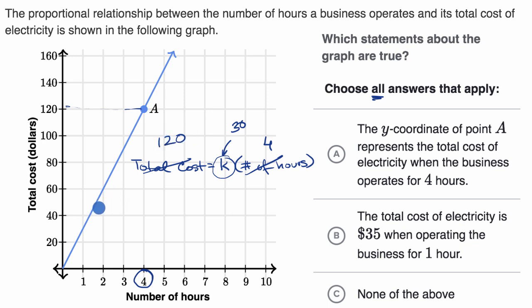So we can write that proportional relationship where our total cost is going to be equal to our constant of proportionality, 30, times our number of hours. So let's see which of these choices, and it might be more than one, say this or describe what's going on here.